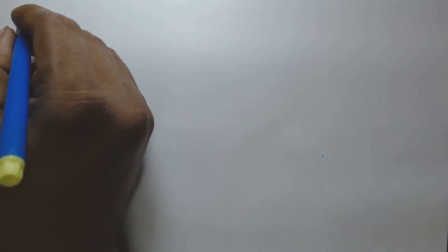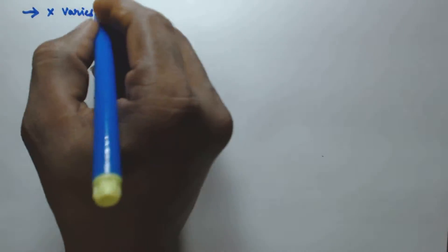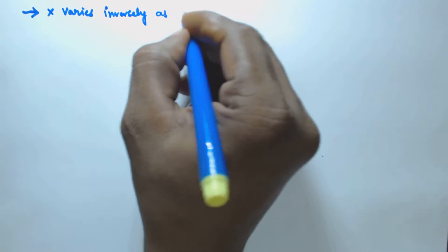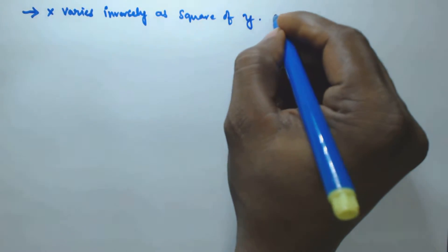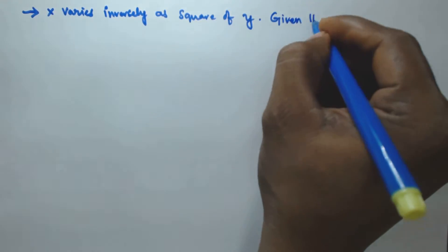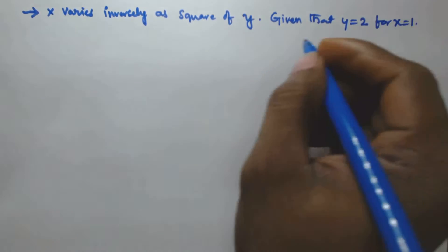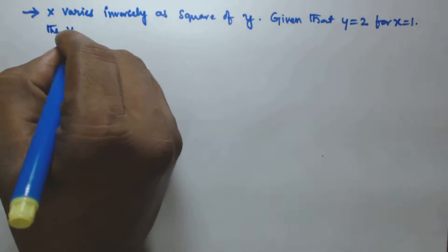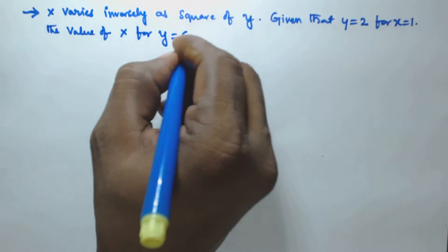Hello friends, in this video we will see a problem based on proportionate variation. The problem is: x varies inversely as square of y. It is given that y is equal to 2 for x is equal to 1. Then the value of x for y is equal to 6 will be?